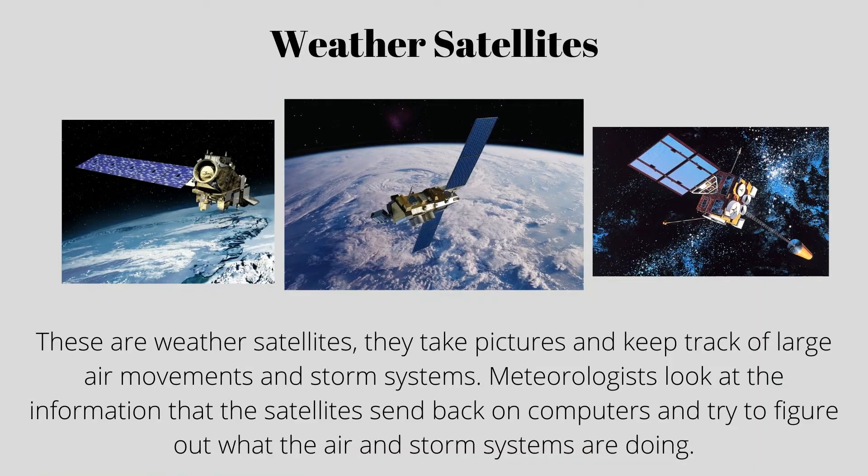These are weather satellites. They take pictures and keep track of large air movements and storm systems. Meteorologists look at the information that the satellites send back on computers, and try to figure out what the air and storm systems are doing.